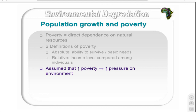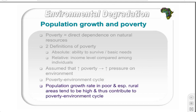With increasing poverty, there is increasing pressure on the environment. This leads to the poverty-environment cycle: as individuals become poorer, they rely more heavily on natural resources such as firewood and wild berries. Increased use of these resources leads to environmental degradation, which in turn leaves individuals with fewer resources, causing even more inefficient resource use. Population growth rates in poor and especially rural areas tend to be higher than in urban and industrialized areas, contributing further to this cycle.